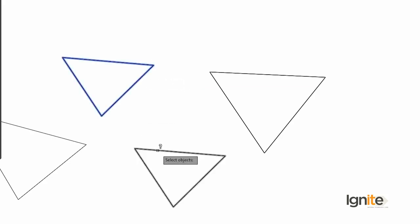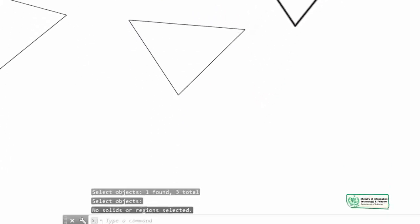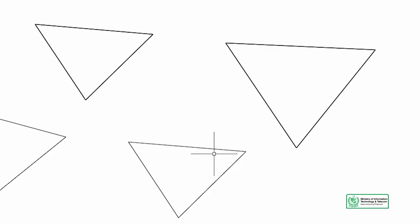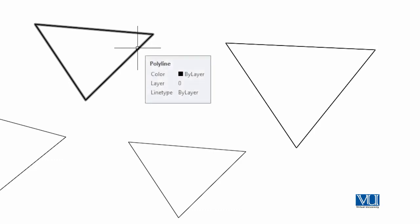We select 1, 2 — because we have 3 objects — and press Enter. But the message is: 'No solids or regions selected.' What this means is that although these are boundaries, they are not regions or solids. So in order to find out the cumulative area, we must have solid regions. Now, the difference is going to be our Region command.